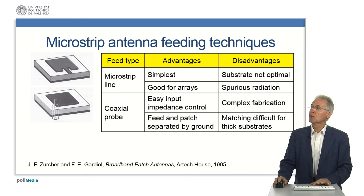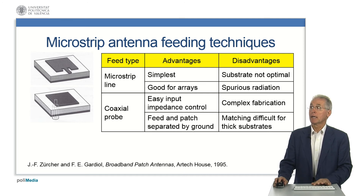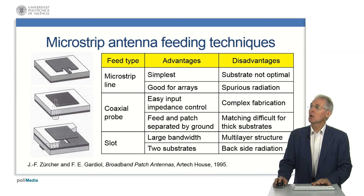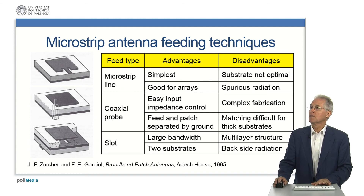The coaxial probe is also a very popular way of feeding a microstrip antenna. It provides easy control of the input impedance, and the patch and feeding system are separated by the ground plane. However, it is mechanically complex — drilling and soldering are required — and impedance matching is difficult for thick substrates. The slot or aperture coupled feed can provide large bandwidth, and since two substrates are used, they can be optimized independently. However, it uses a complex multilayer structure and produces radiation on the backside of the ground plane.